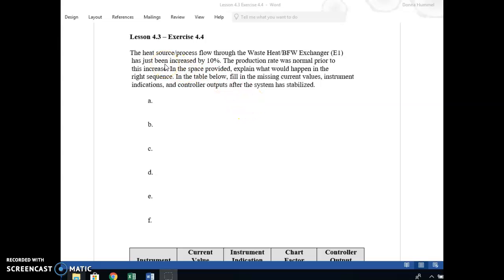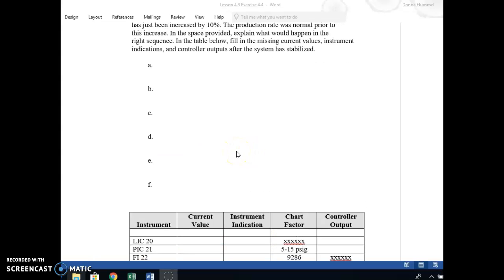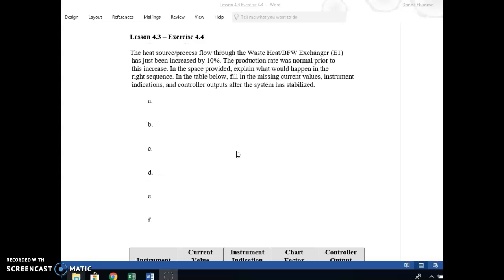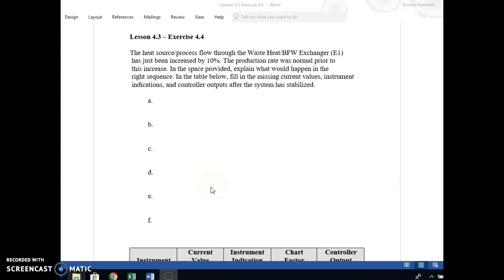What we want to know is what do we have to change in our table here? What are our new normal operating conditions if we're going to increase our production by 10%? Production rate was normal prior to the increase, and now they want to go up 10%. This is going to be your answer sheet. If you're taking the test, this is something similar to that, so bonus points for you. You would list in order here what are the things that are going to change, and then we're going to go through that.